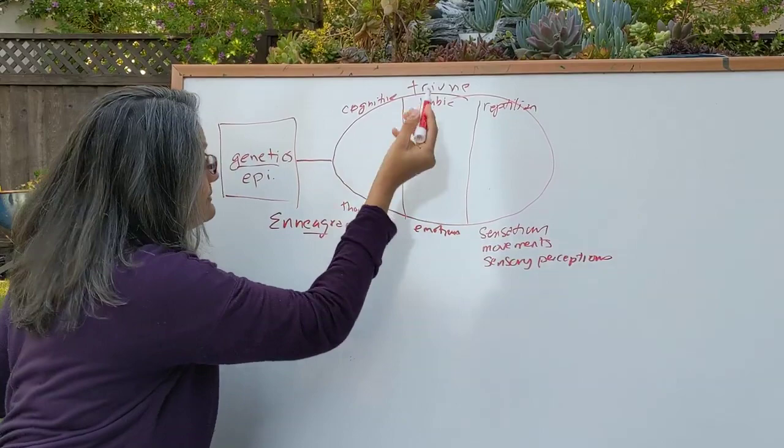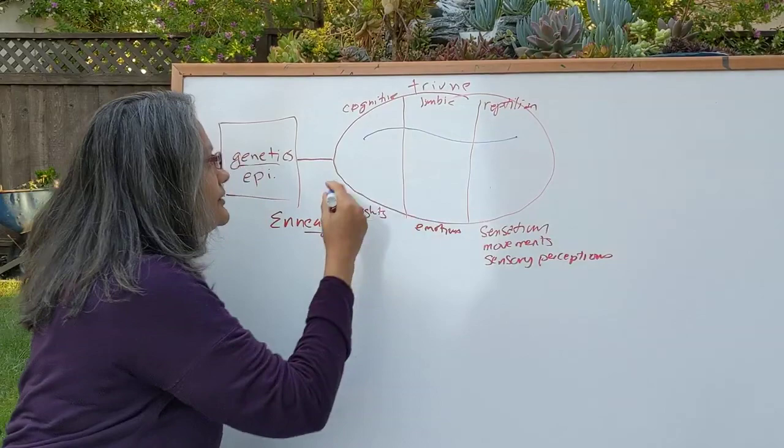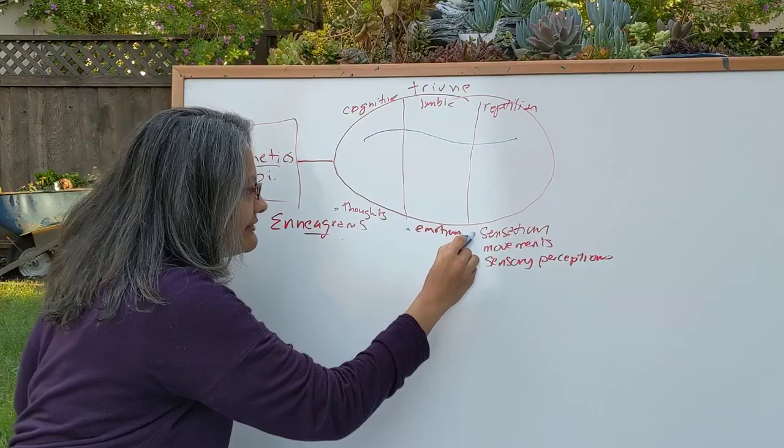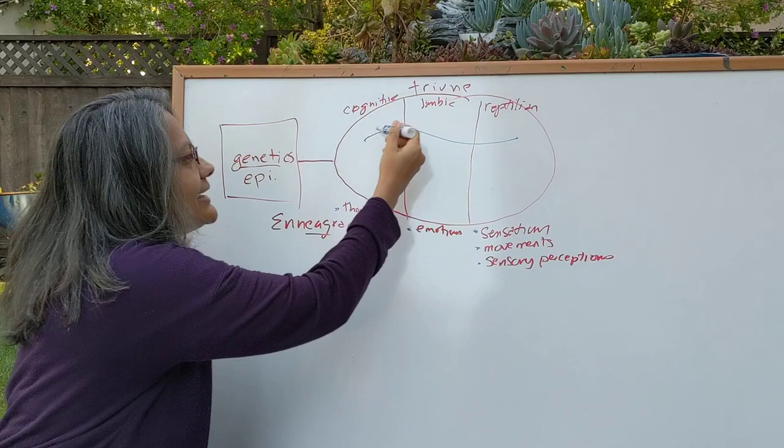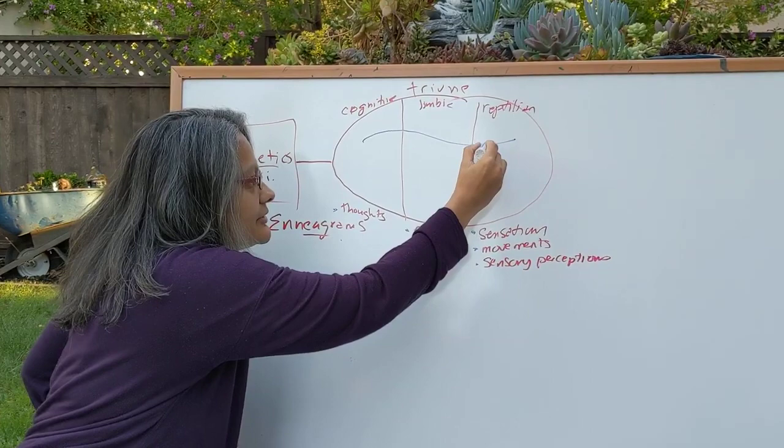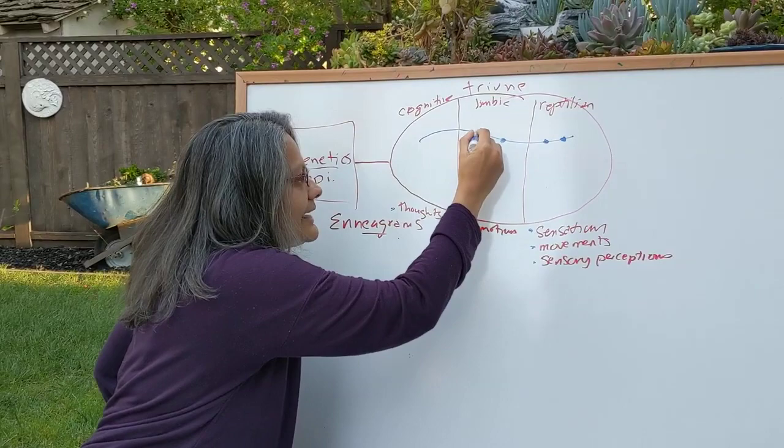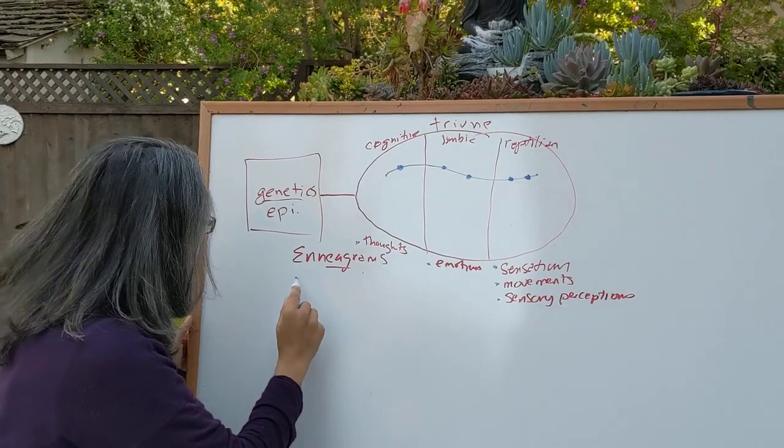So what happens? If you have a good experience in childhood, what normally happens is you have the triune brain, three parts of the brain. You have the five building blocks of every experience: your thoughts, emotions, sensations, movements, and sensory perceptions. So let's say I have a memory of running through a meadow with my sister. Maybe I registered green grass and the smell of the flowers. I had a feeling of being joyful and happy. Maybe I had a thought of I'm connected and I'm loved.